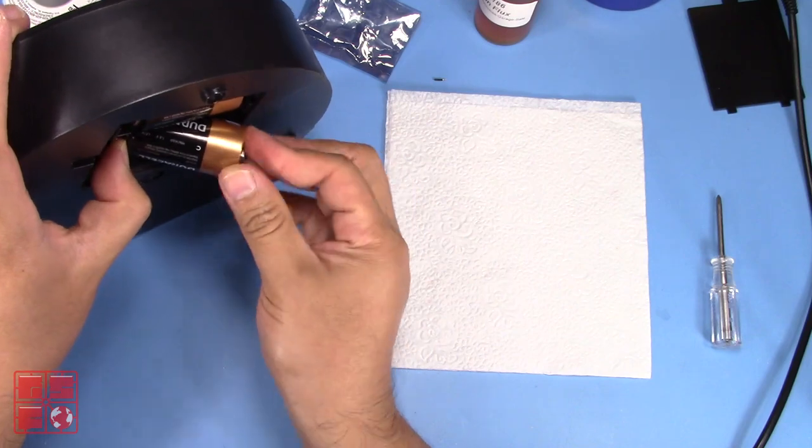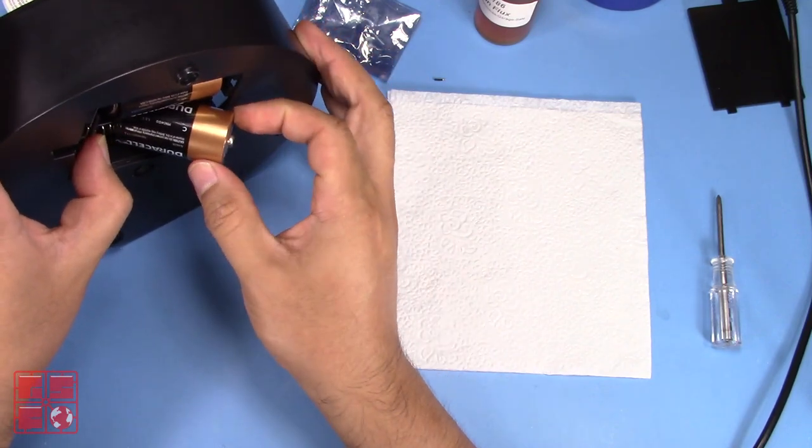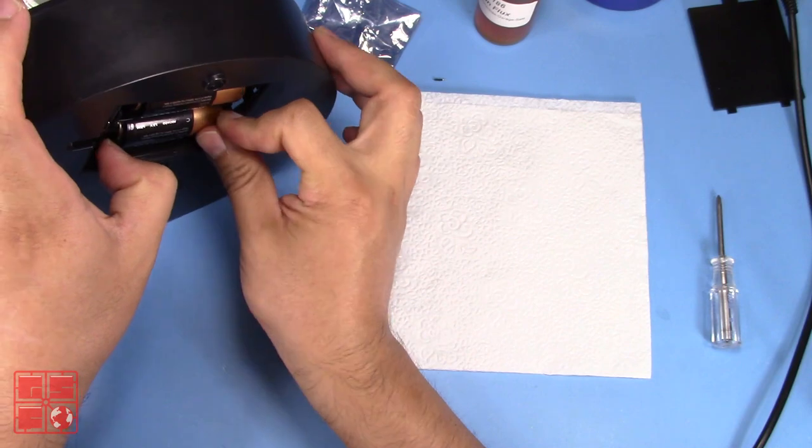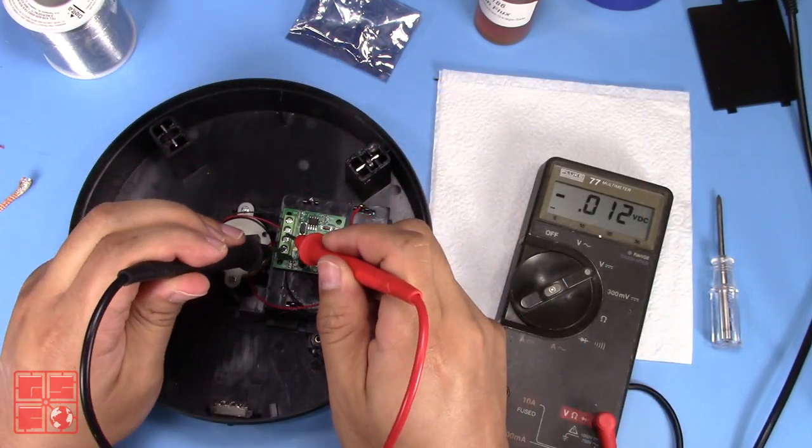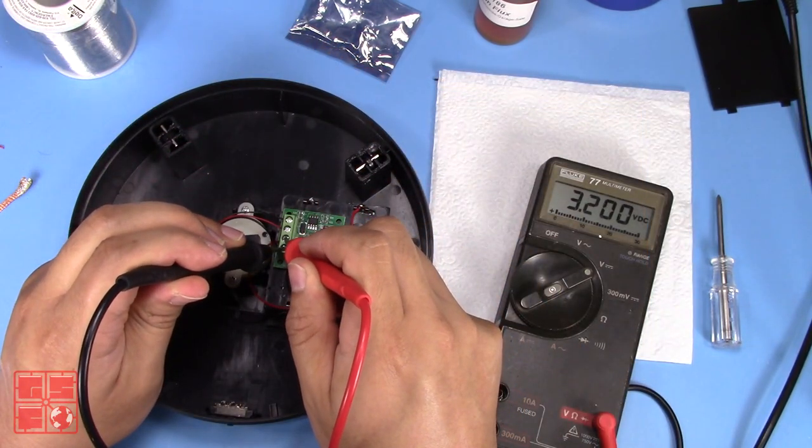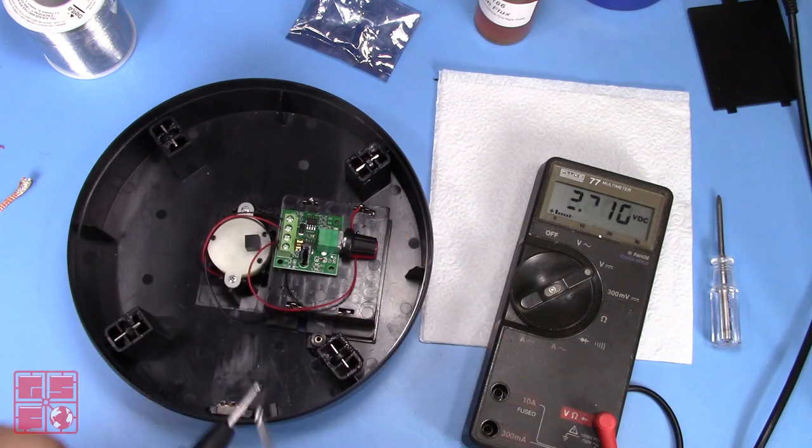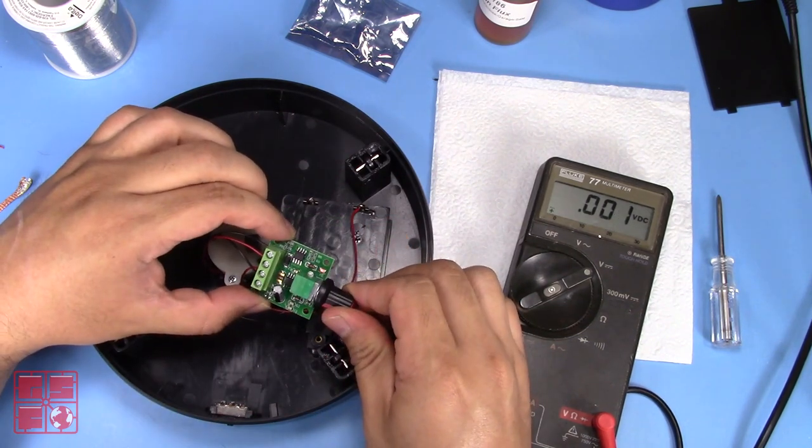And finally, I reinstalled the batteries. This is like the fourth time. I didn't really show me taking them off, but I've been taking them off. Test the voltages again. And yes, now that it reads nice and strong at 3.2 volts. Moment of truth.